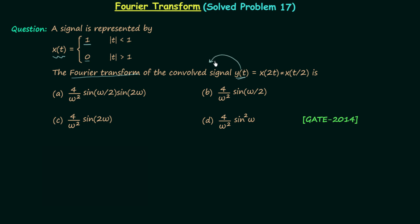Signal y(t) is a convolved signal. It is equal to the convolution of signal x(2t) with signal x(t/2). We are required to calculate the Fourier transform of signal y(t). Let's say y(t) has Fourier transform Y(ω). We know that when two time-domain signals are convolved, their corresponding Fourier transforms are multiplied.